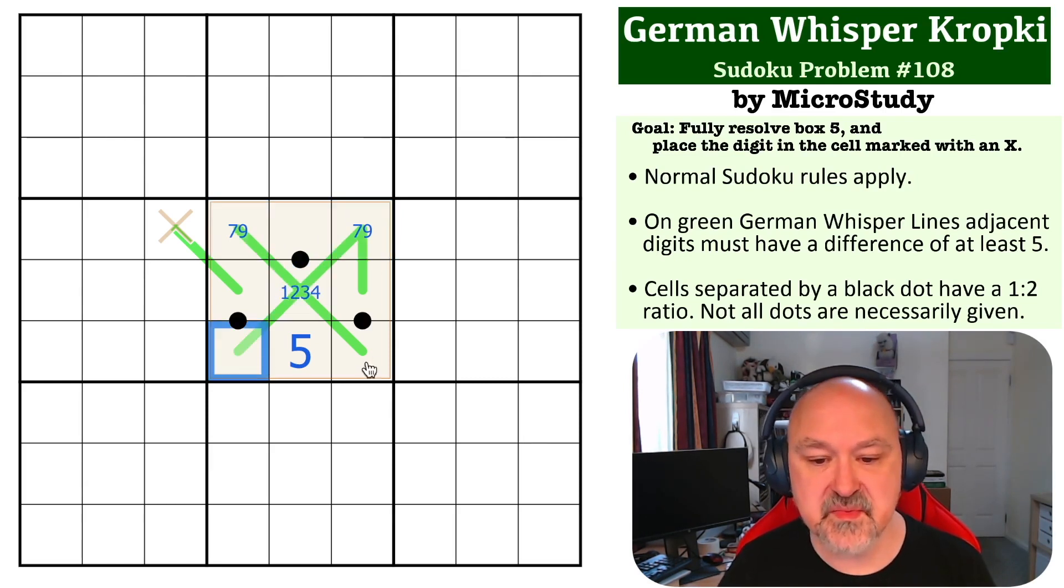So because these are high digits, this must be a low digit, 1, 2, 3, 4. These must be high digits, 6, 7, 8, 9, but we know they can't be 7, 9. Now there's more I could tell about this. So these become 6, 8, and these are all 1, 2, 3, 4.